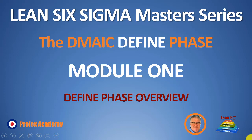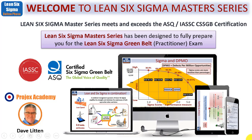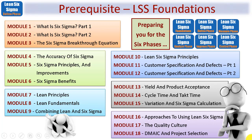Hello and a very warm welcome to our Lean Six Sigma Masters Series. This is the first of the five phases within the DMAIC sequence, and the first phase is called the Define Phase. As you would expect in module one, I'm going to present to you an overview of the Define Phase. The Lean Six Sigma Master Series has been designed to fully prepare you for the Lean Six Sigma Green Belt, otherwise known as practitioner exam. My name is Dave Litton from the Projects Academy.